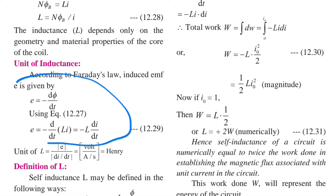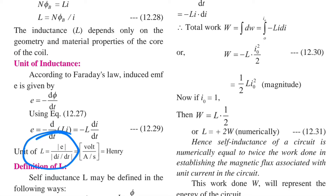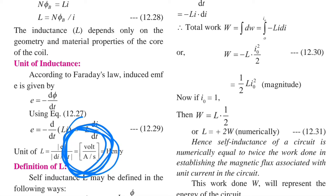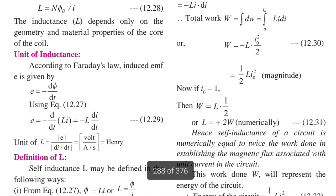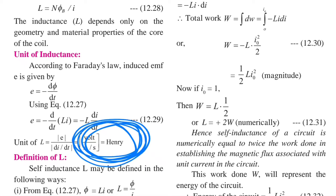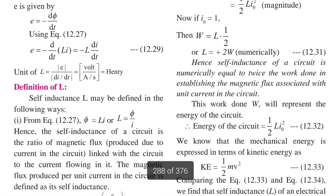Here dI/dt means the rate of change of current. From these equations, L = |e| / |dI/dt|. Since EMF is in volts and dI/dt is in amperes per second, the unit of self inductance is volt per ampere per second, commonly termed as henry.